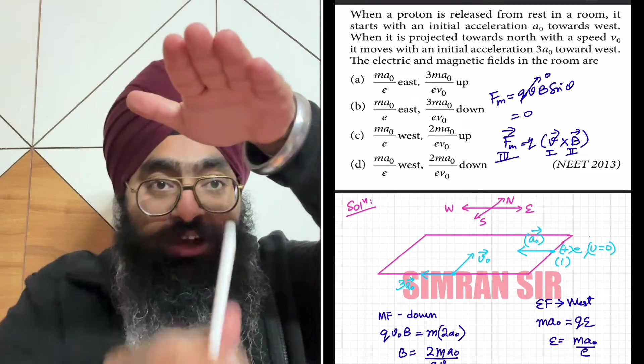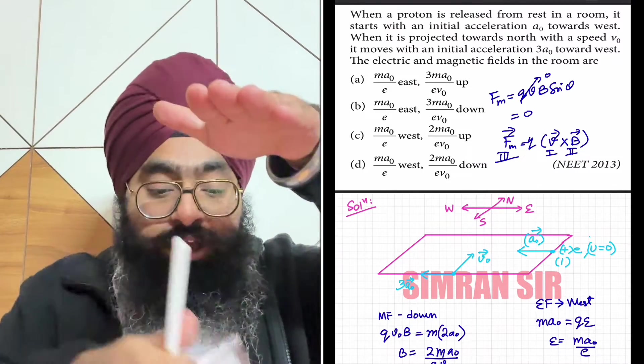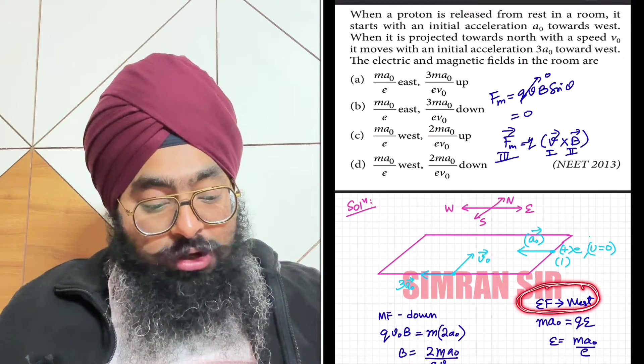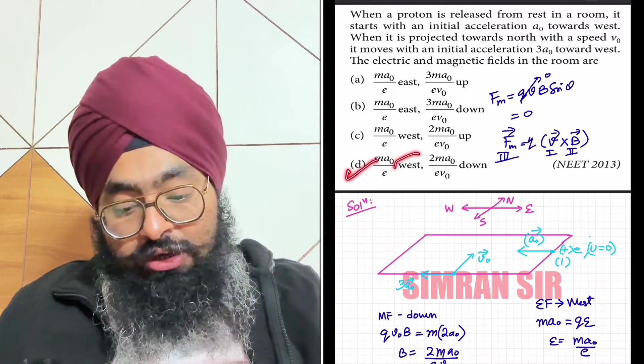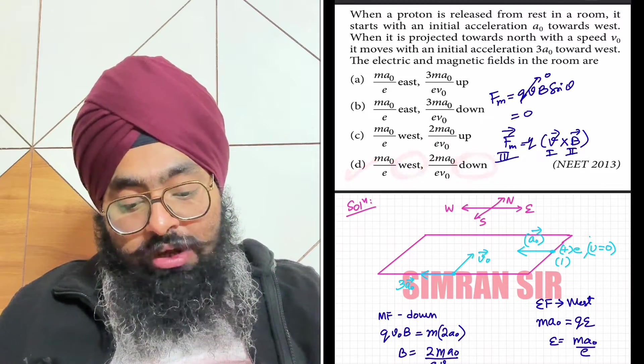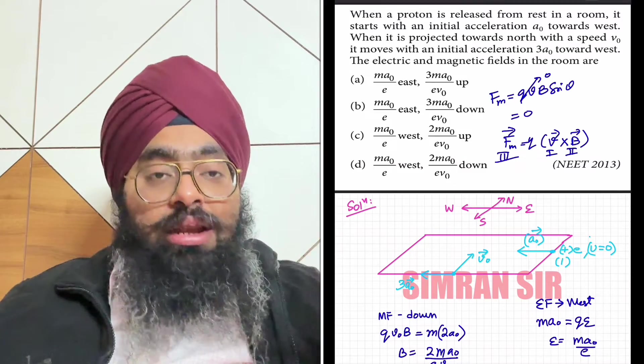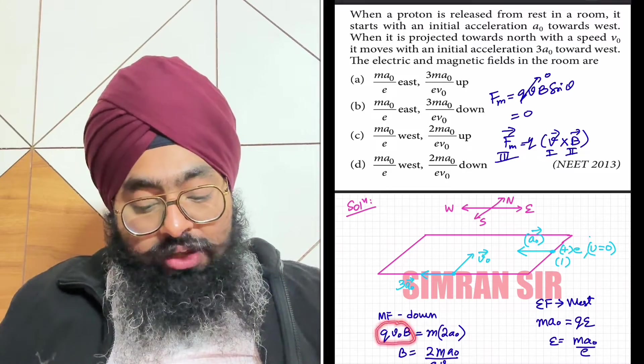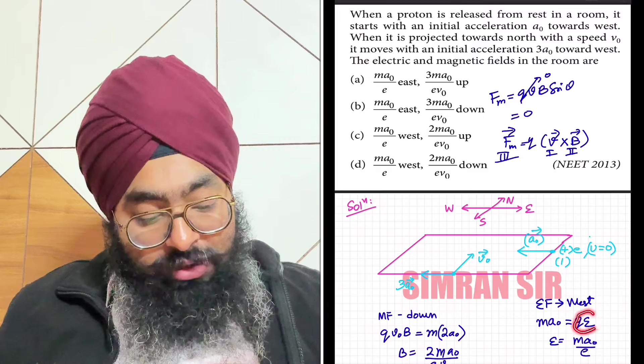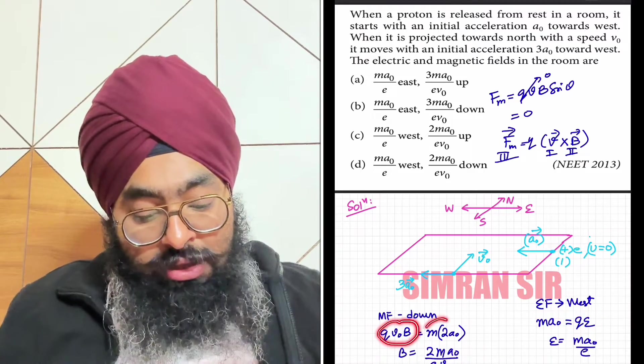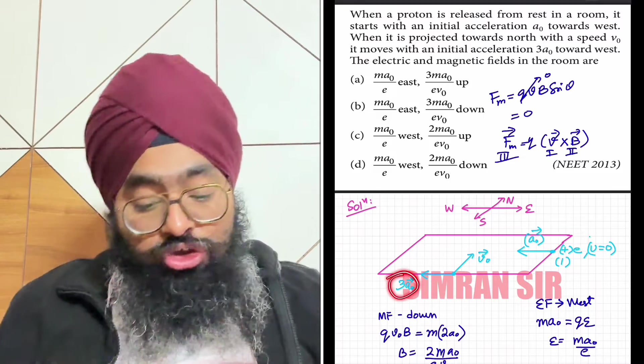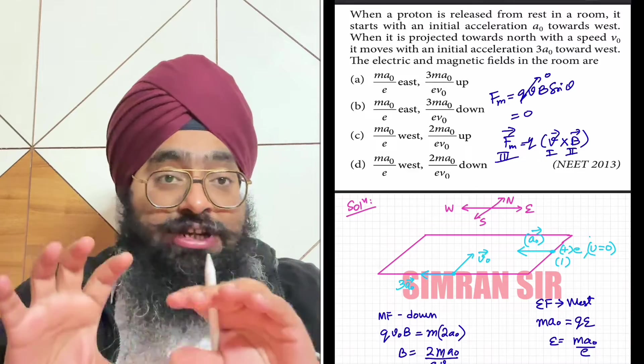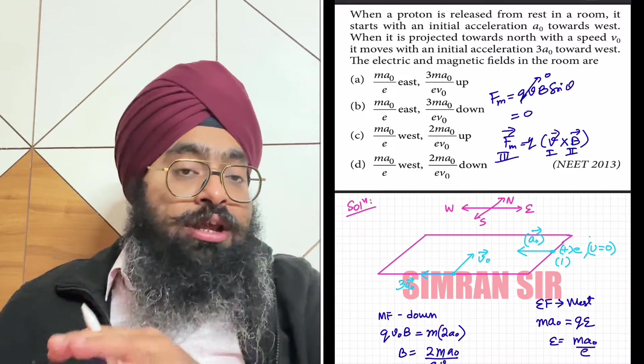One option is: electric field west, magnetic field down. Now for magnitude: magnetic force is qv0B, electric force is ma0. Total force is 3ma0. So magnetic force is 2ma0, giving B equals 2ma0 by ev0.